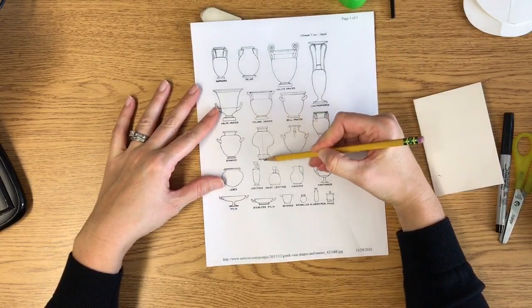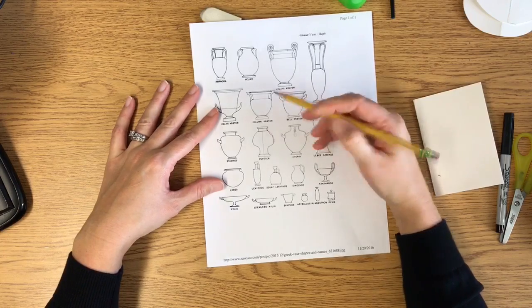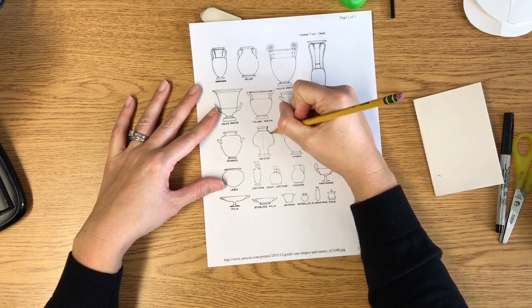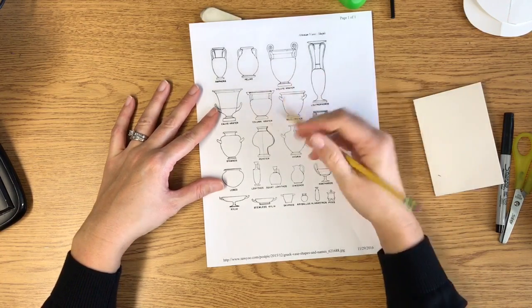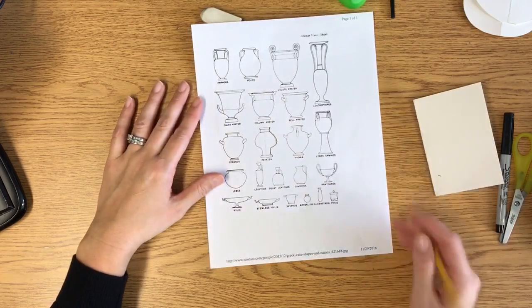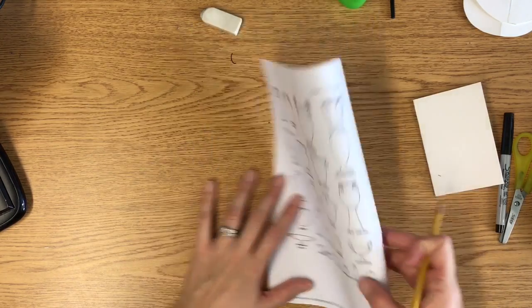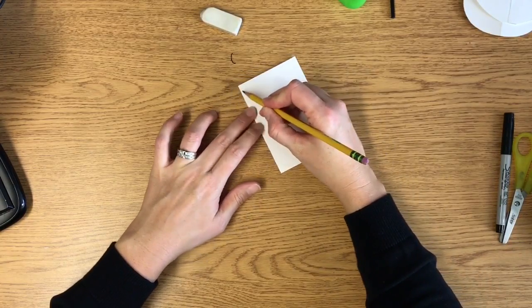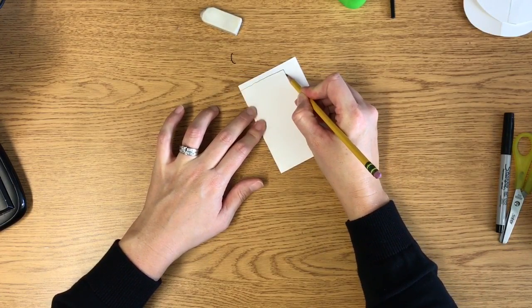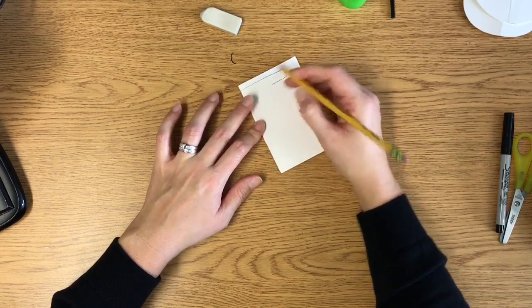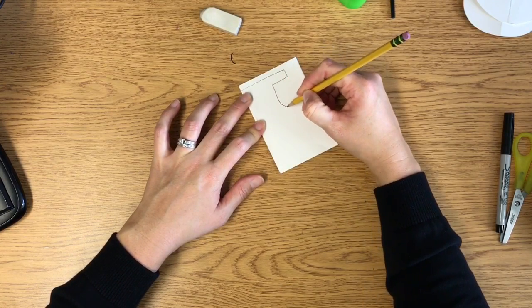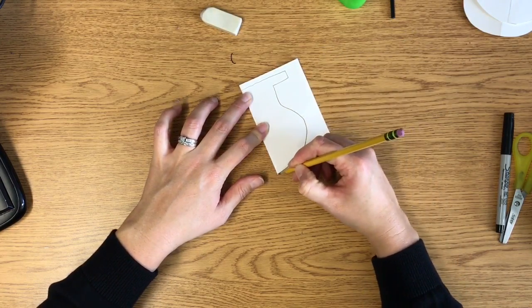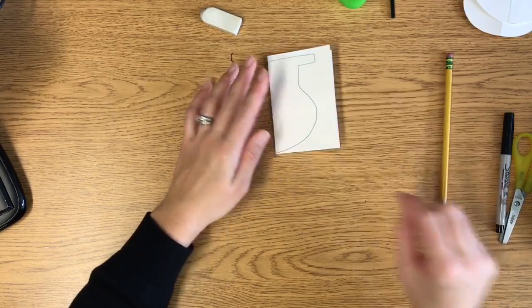And use that handout to sort of help you. So if you sort of draw a line down the middle here, you'll see that this vase shape kind of looks like that. So use this to help you. Okay. So I'm going to draw my vase shape right into the side. So we're drawing half of the vase. And I'm not going to draw mine with a handle. I'm going to just leave it like this.